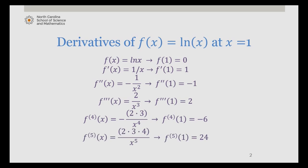And the fifth derivative is 2 times 3 times 4 divided by x to the fifth, evaluated at 1 gives us 24.